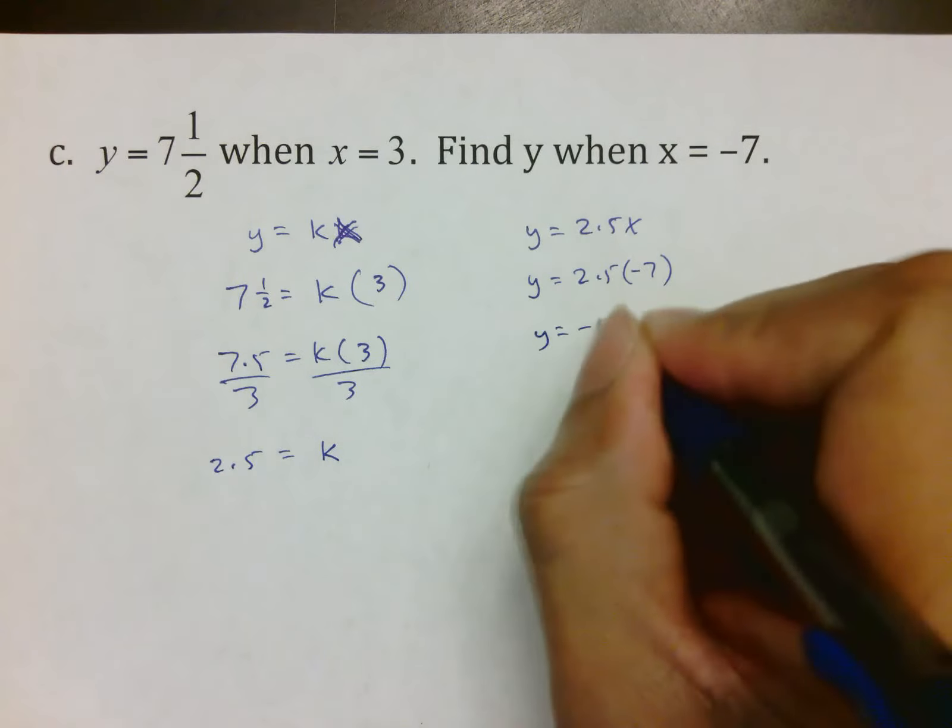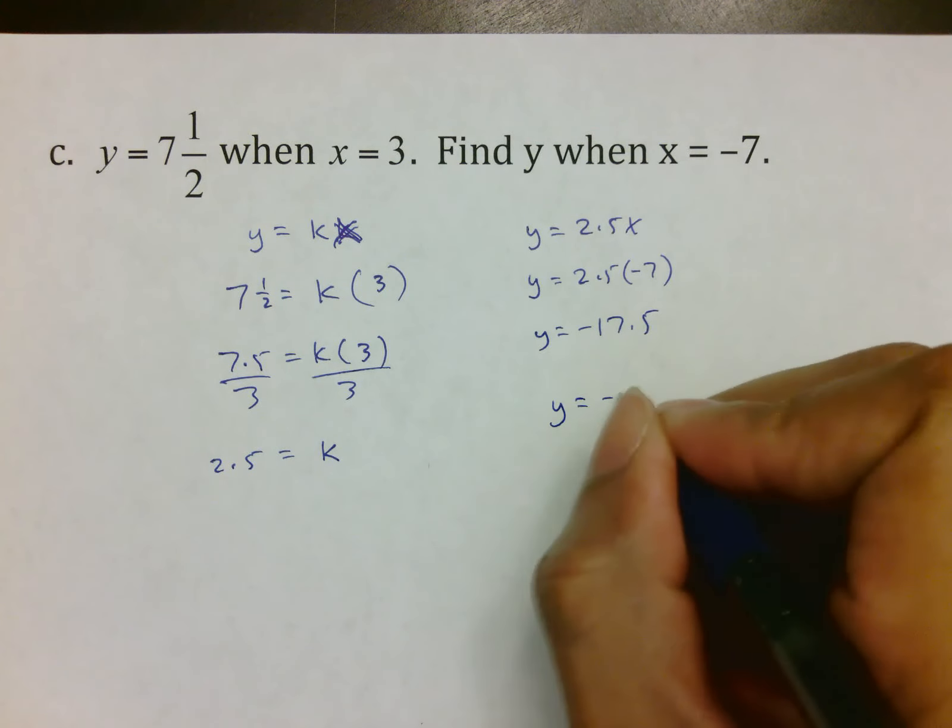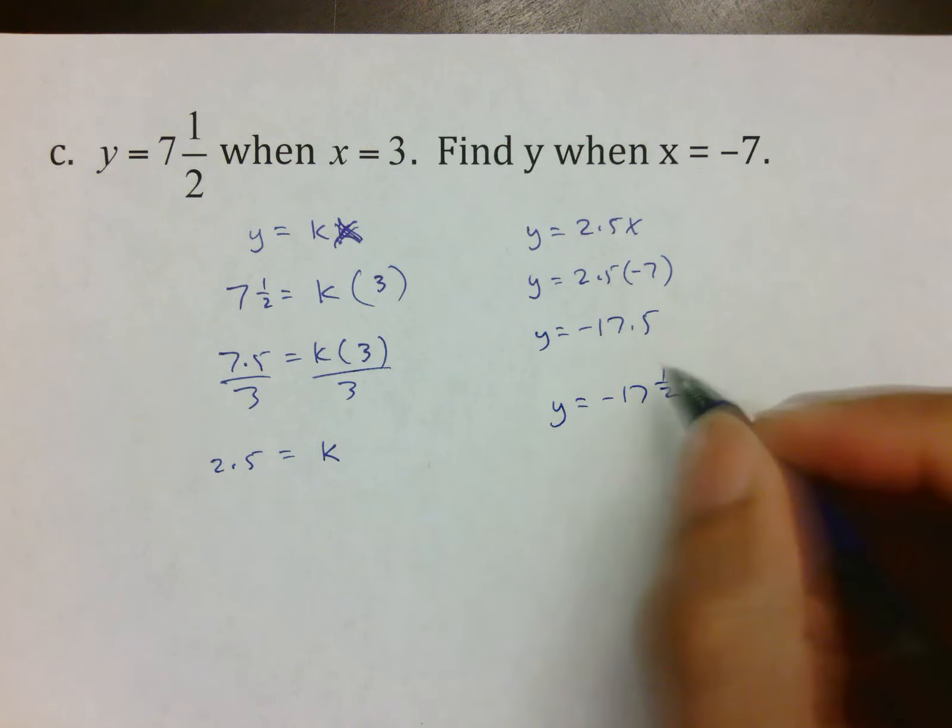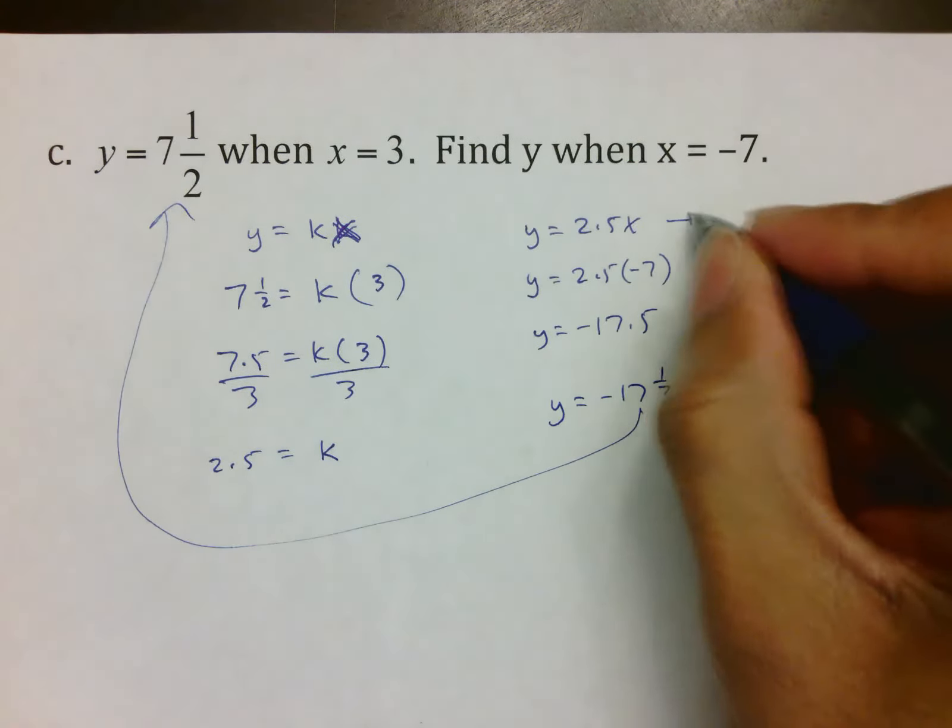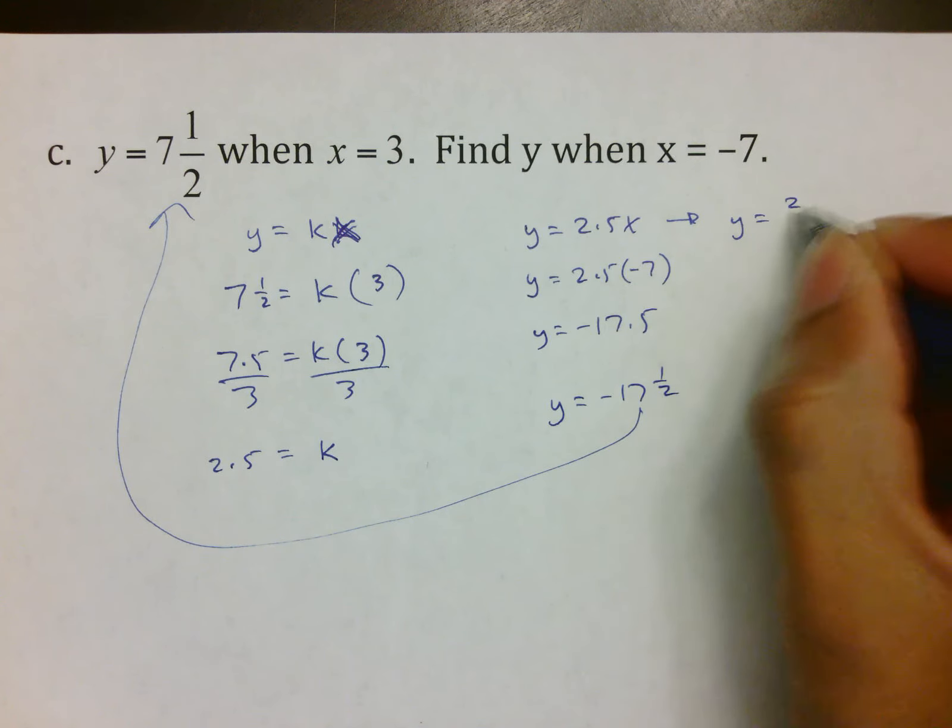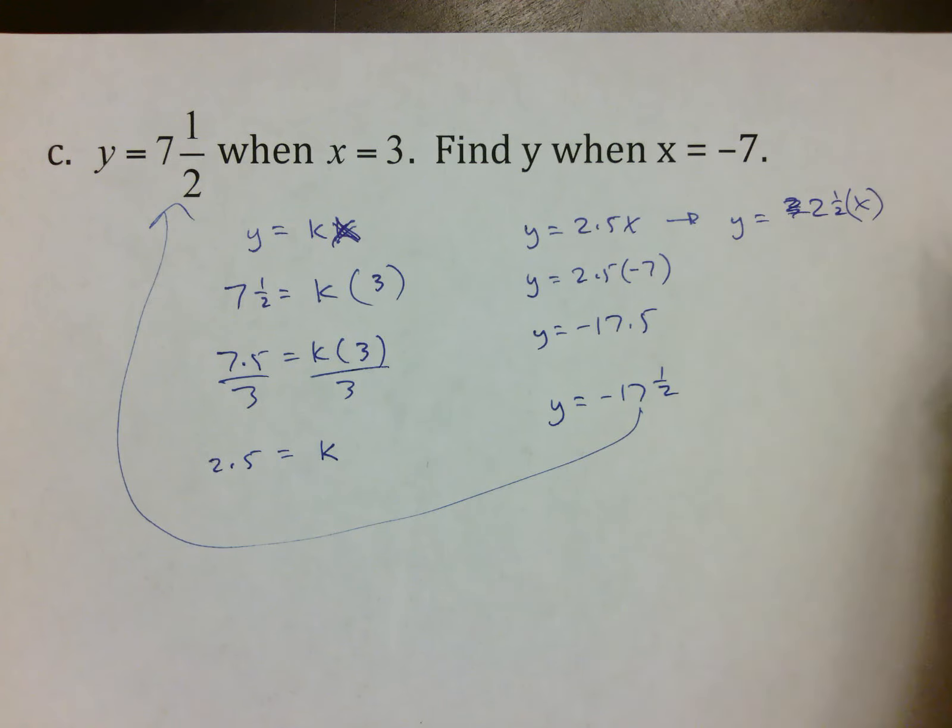And that gives me -17.5, or y is equal to -17 and 1 half, because you want your answer to match original format. Just like if they said, what is the formula, your formula would be y equals 2 and 1 half x. That's the general idea of what's going on.